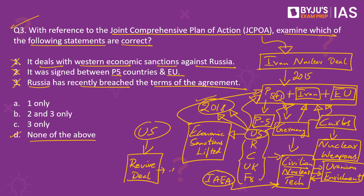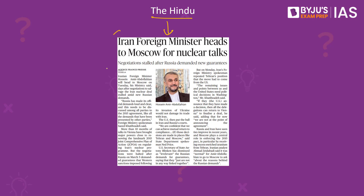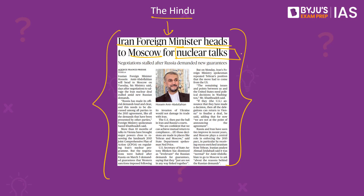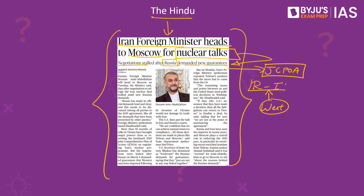Since last year, JCPOA negotiations have begun again amongst the members to revive the nuclear deal and restore normalcy in relations between Iran and the western countries. This topic is in news because according to an article in The Hindu, Iran's foreign minister is headed to Russia for discussions related to the revival of the nuclear talks, as the negotiations have currently been stalled by Russia after the outbreak of the war with Ukraine. Russia, which has been hit by western sanctions, has demanded new guarantees that it will not proceed with the JCPOA negotiations until the western countries guarantee that Russian ties with Iran are not impacted by western economic sanctions.